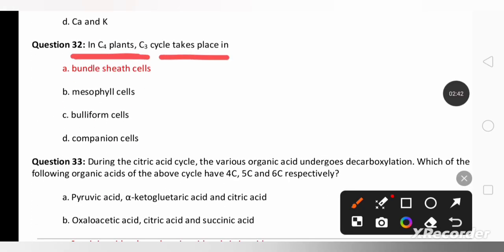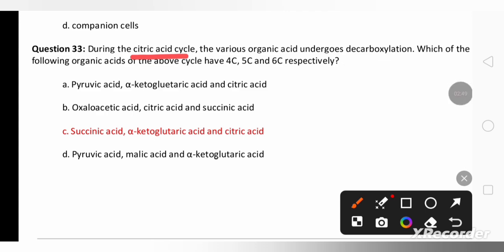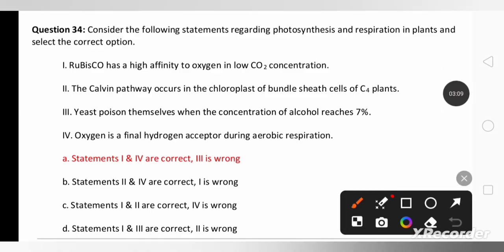In C4 plants, C3 cycle takes place in bundle sheath cells. Very important you need to remember. During citric acid cycle, Krebs cycle, various organic acids undergo decarboxylation. Which of the following organic acids of the above cycle: 4 carbon is succinic acid, 5 carbon alpha-ketoglutaric acid and 6 carbon is citric acid. So option C is the right answer for this question. Consider the following statement regarding photosynthesis and respiration in plants and select the correct option.